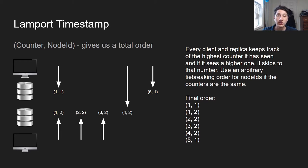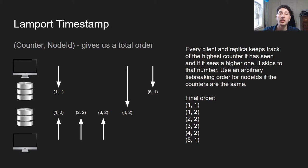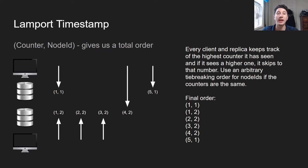To summarize: every single client and replica keeps track of the highest counter it's seen, and if it sees a higher one, it skips to that number. And if two operations have the same counter but different node IDs, we just order the nodes somehow to get an arbitrary tie-breaking order. So our final order is 1,1 → 1,2 → 2,2 → 3,2 → 4,2 → 5,1. We go by the counters, and if two operations have the same counter, we use the tie-breaking node order.